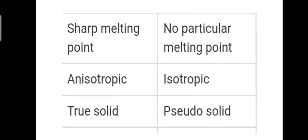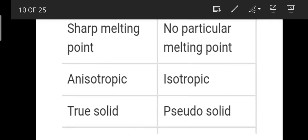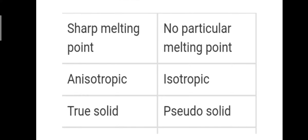Amorphous solids have no particular melting point. Crystalline solids show anisotropic behavior while amorphous solids show isotropic behavior. Crystalline solids are true solids, while amorphous solids are pseudo solids — that is, false solids.